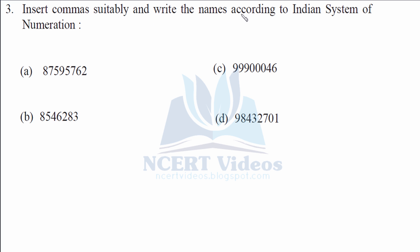Question 3: Insert commas suitably and write the names according to the Indian system of numeration. In the Indian system, we place commas after hundreds, then after 10 lakhs, and after 10 crores. Let's first place commas in all four questions — that makes part a. Similarly in part c, after hundreds, after 10 lakhs, and after 10 crores. Likewise for b and d.